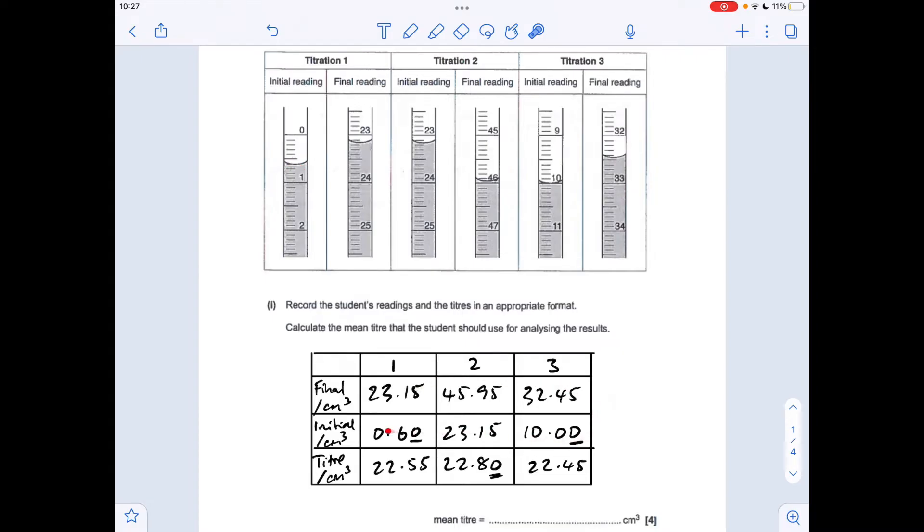So there's all the results there. I've underlined these zeros here because that's the kind of thing I see missed off if I'm marking work. So for the mean titre we're looking for two concordant results. You can see that 22.55 and 22.45 are only 0.10 cm³ apart, so they are concordant. Titration two is too far away, so we're going to base the mean on one and three. That gives a mean titre of 22.50.